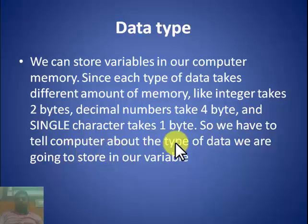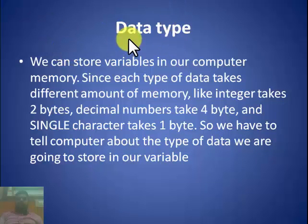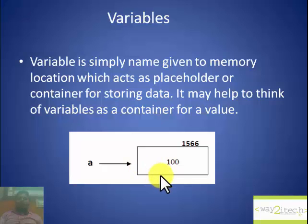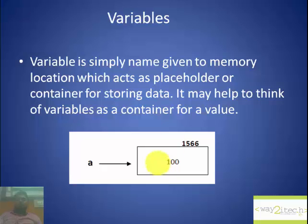We have to tell the computer about the type of data we are going to store in our variables. We will use data types to tell the computer that we will be storing integers, decimal numbers, or characters. According to this, the computer will allocate memory: 1 byte for characters, 2 bytes for integers, and 4 bytes for float numbers.